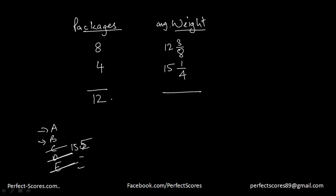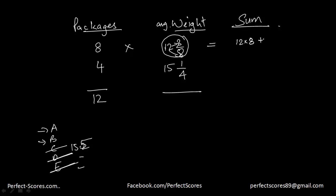So let's see. What is the total sum of weight? If I try to calculate the total sum of weight, this times this would give me the total sum of weight. So how do you resolve a mixed fraction? You would say 12 into 8 is 96, plus 3 is 99. So 12 and 3/8 gives you 99 divided by 8. So the total sum is going to be equal to 99.